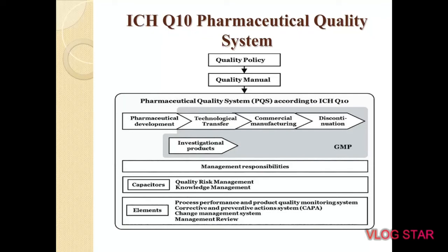As discussed earlier, CAPA is also included in ICH Q10, the Pharmaceutical Quality System. In ICH Q10, it is mentioned how CAPA is correlated and is an important element of the quality system. It is a very important tracking management system in pharmaceutical development, technology transfer, commercial manufacturing, and discontinuation, as mentioned in the management requirements and policy. The quality manual always helps to improve the key performance indicators of the organization in every aspect.